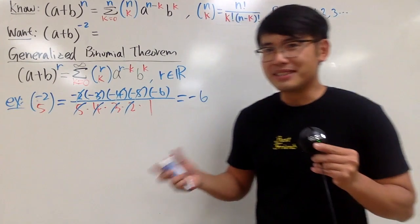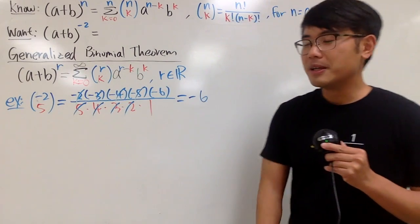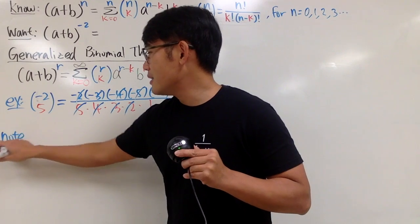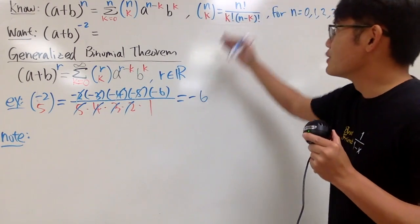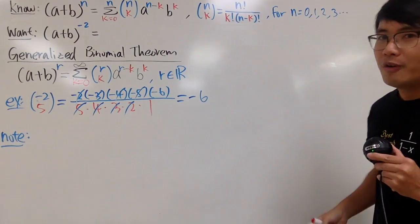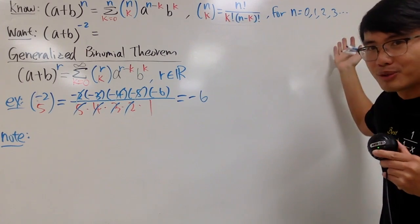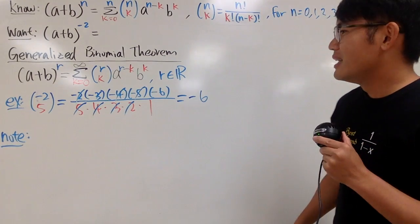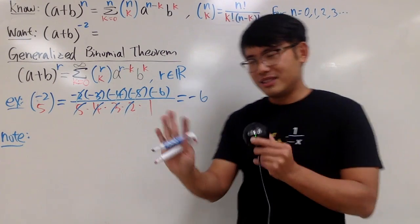This right here is a generalized binomial coefficient — when you say 'generalized,' you can do this kind of thing. Unfortunately, we cannot use factorial notation anymore because factorial is only good for non-negative whole numbers. Zero factorial by definition is 1. You could use the gamma function, but let's stay away from that.